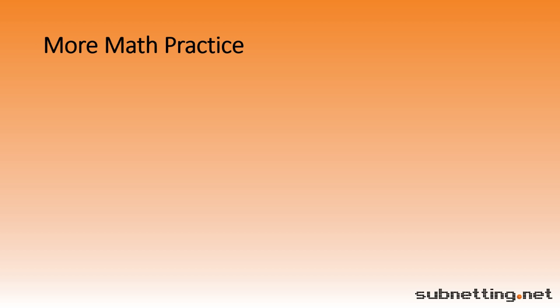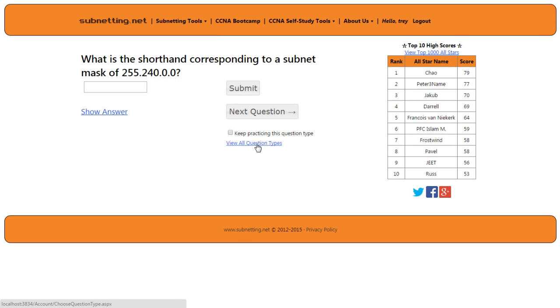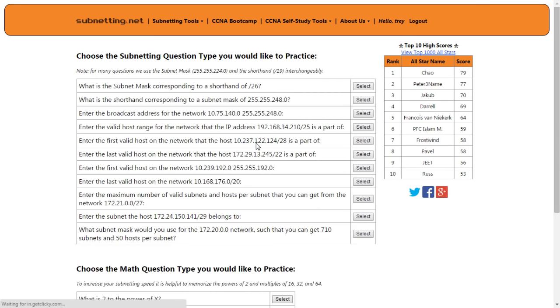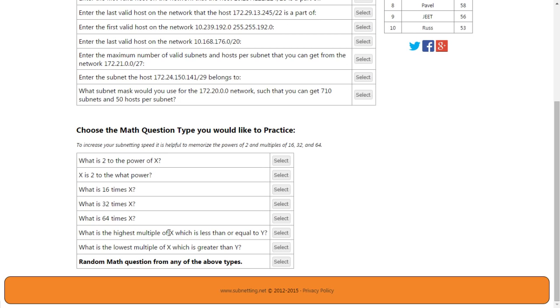You can get more practice with powers of 2 in the subnetting.net math practice questions. To get there, log into your account and go to the practice page. Click on the link for view all question types. Note you won't see this link unless you're logged in with either a free or pro account. The first group of questions are the types you see on the subnetting practice page and also in the subnet game. The math question types at the bottom are only accessible from this page. These are designed to help you practice the types of math questions that are useful to increase your speed with subnetting.